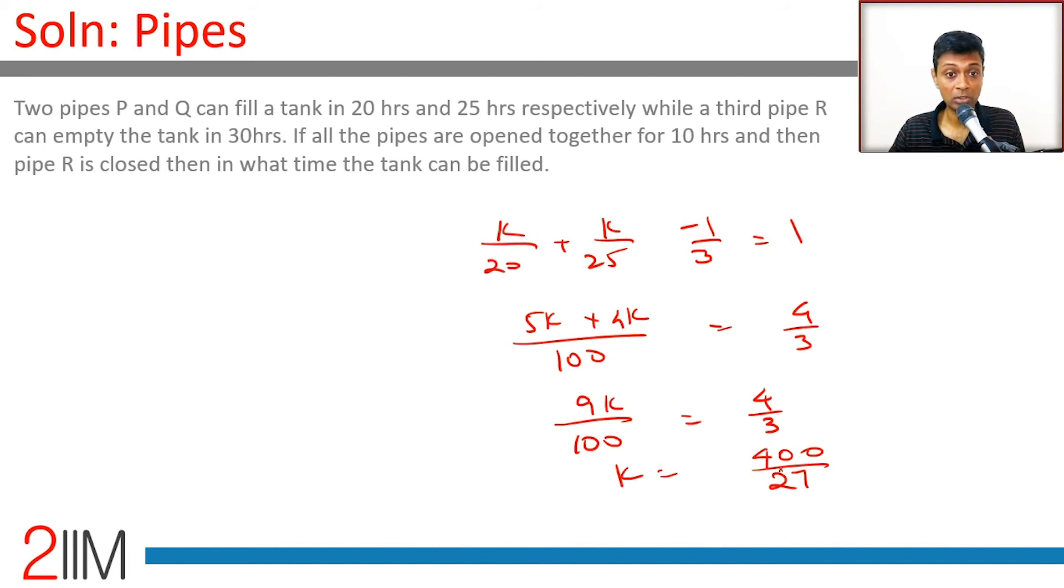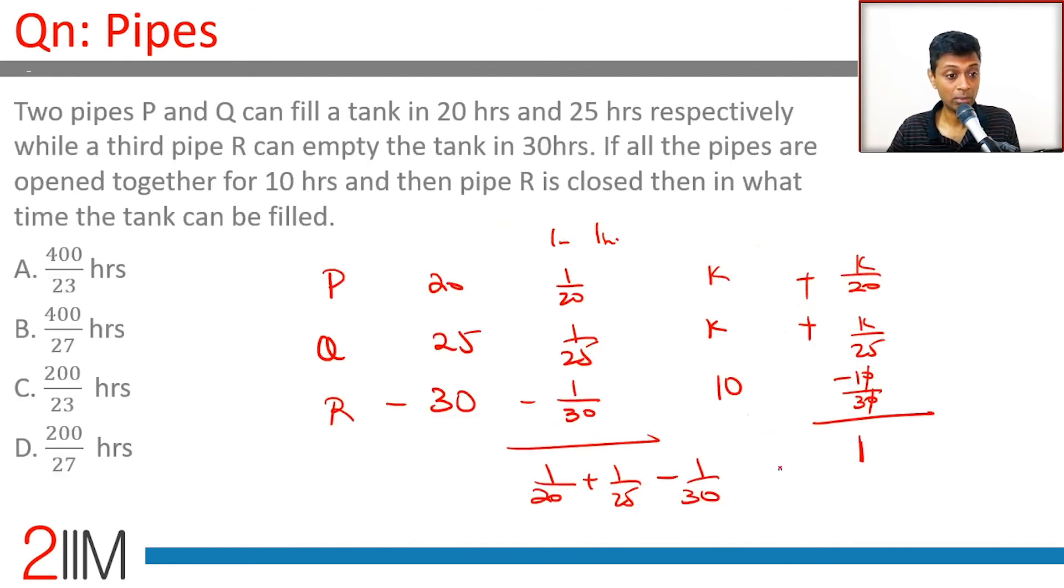They're saying then pipe R is closed, in what time can the tank be filled? The question is asking for how long the tank takes to get filled totally, that is 400/27 hours, not for the remaining hours after pipe R has been closed. So 400/27 hours.